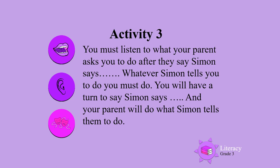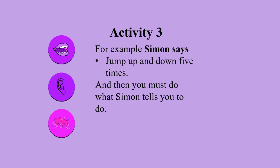Activity 3: you must listen to what your parent asks you to do after they say Simon Says. Whatever Simon tells you to do, you must do. You will have a turn to say Simon Says, and your parent will do what Simon tells them to do. For example, Simon says: jump up and down five times — and then you must do what Simon tells you to do. You must jump up and down five times.